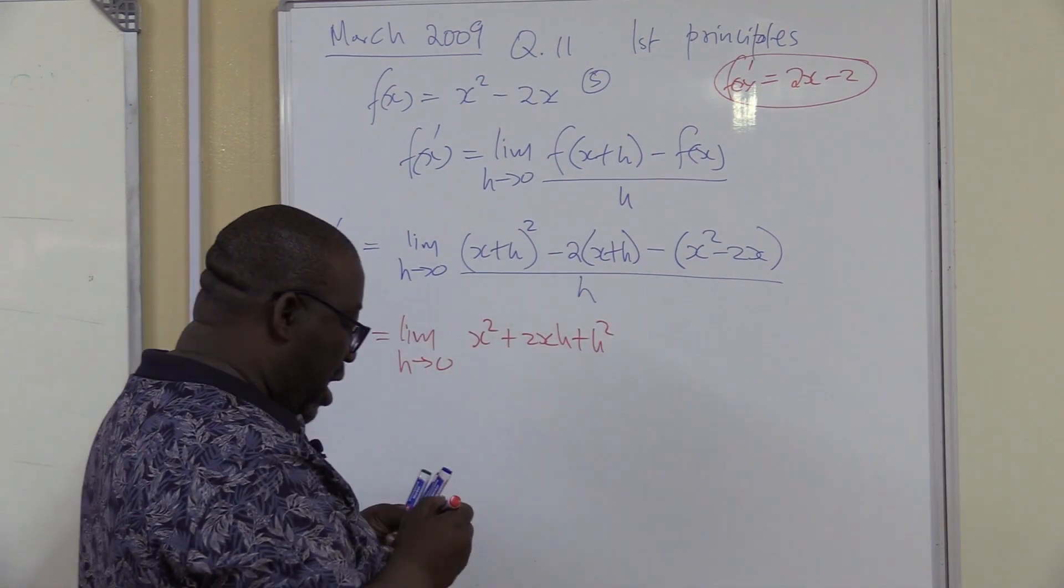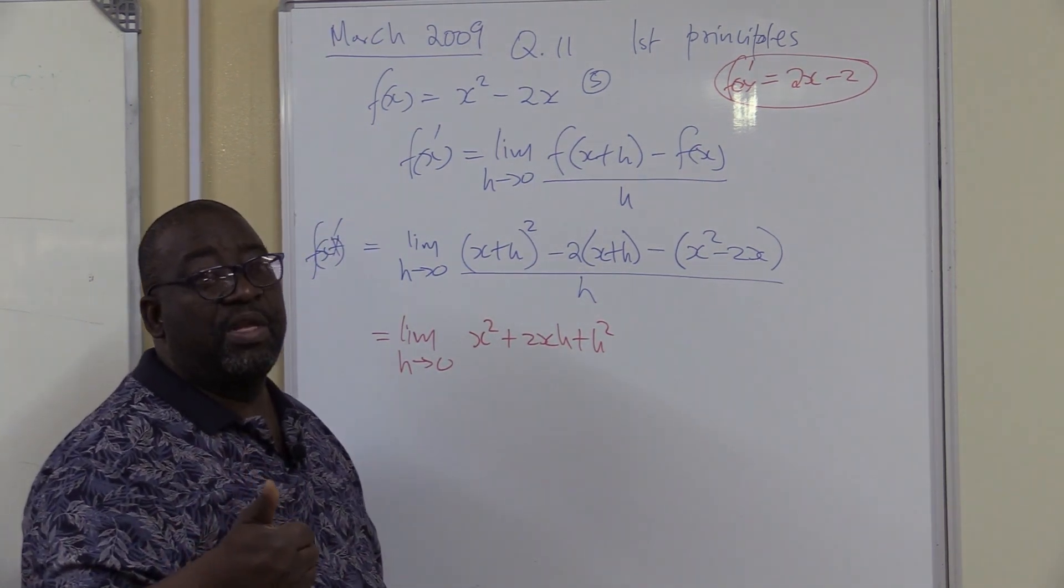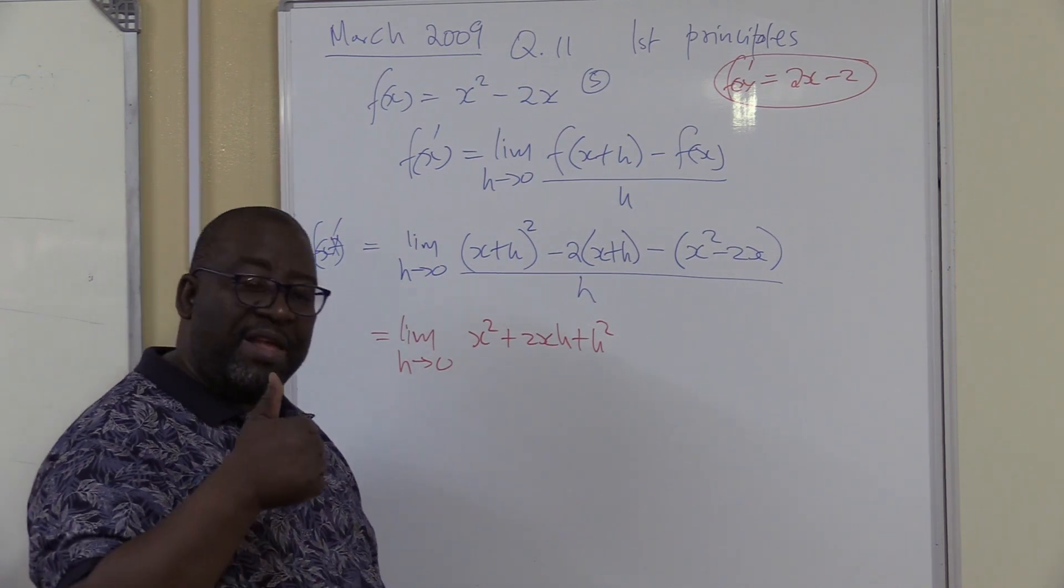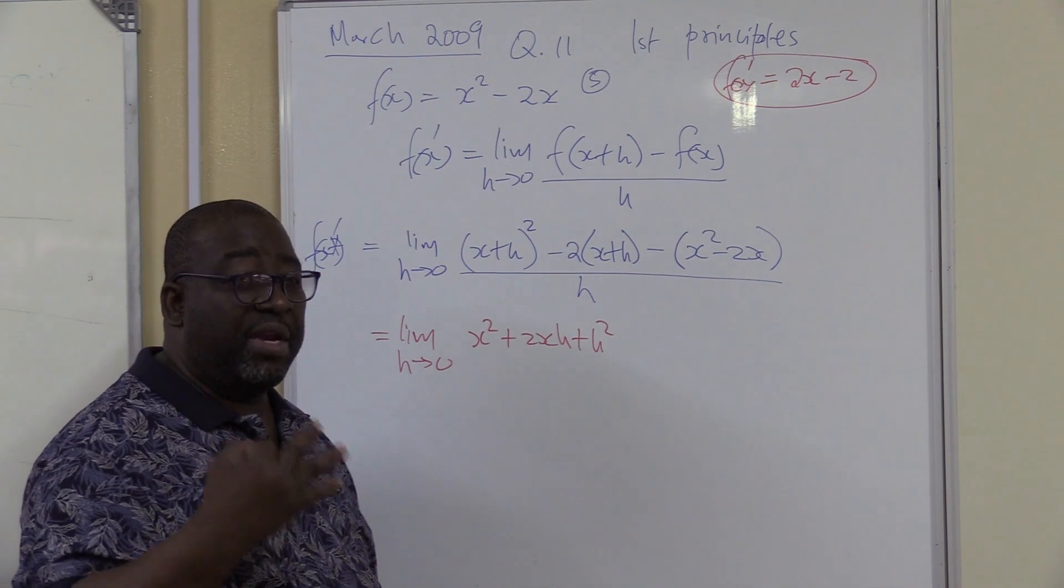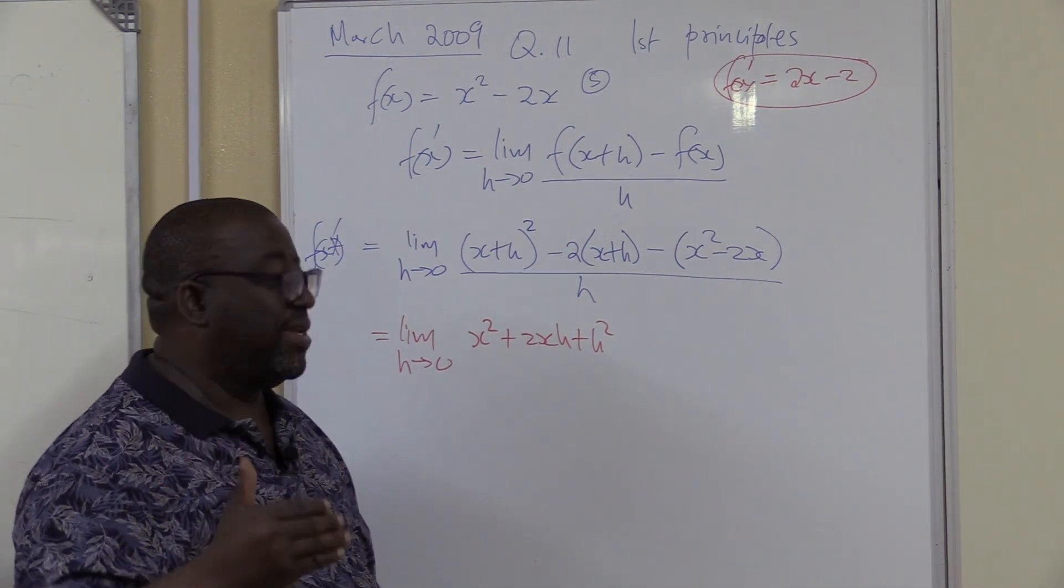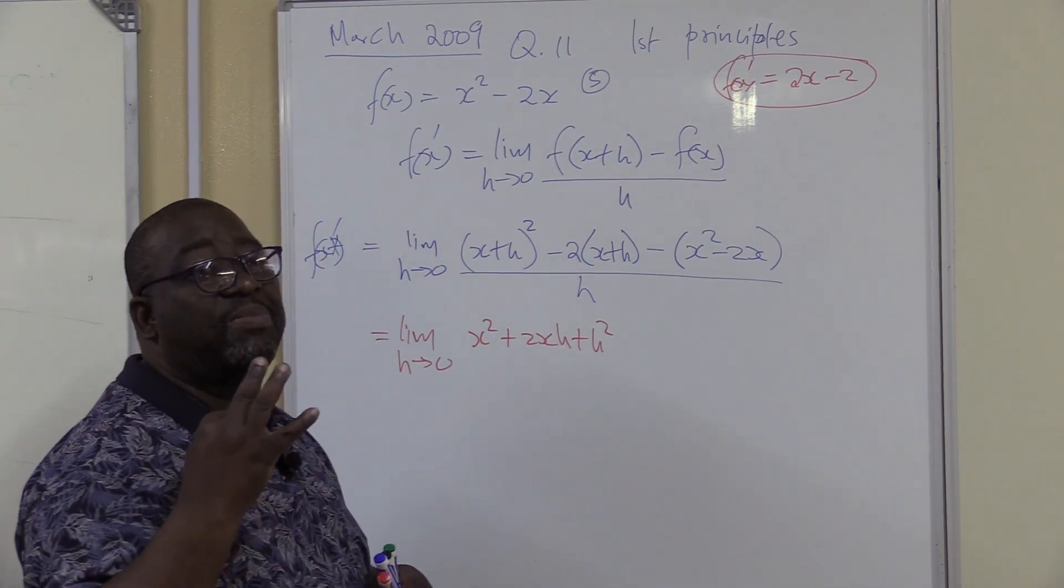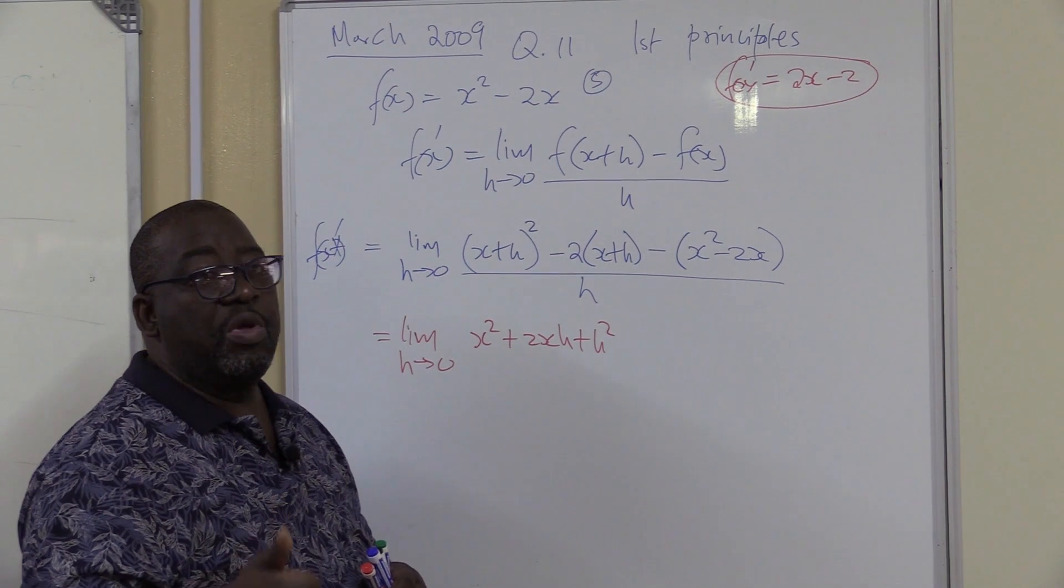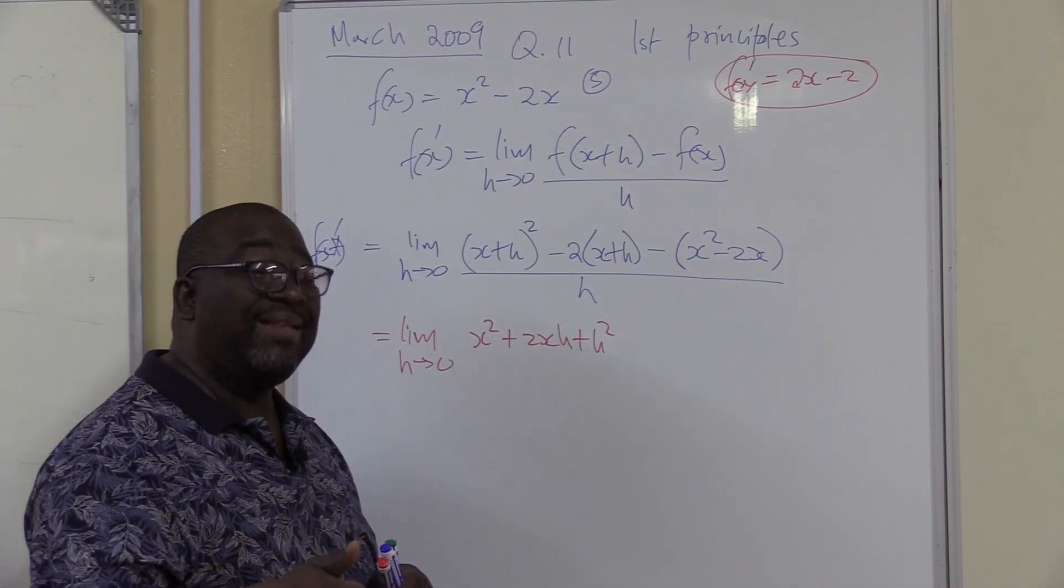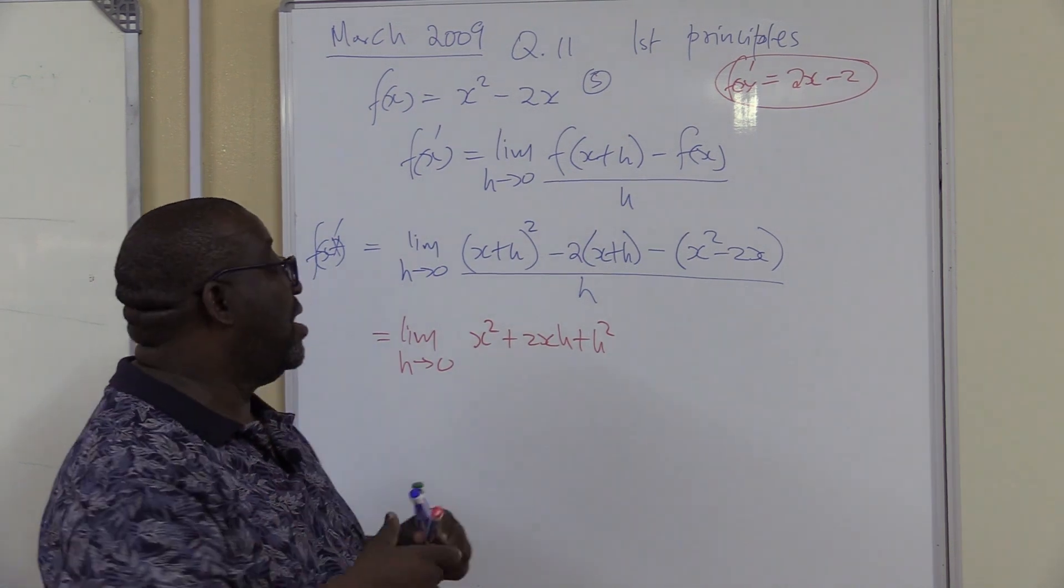How do you square a binomial? Step 1, you multiply the first term by the first term. Step 2, you multiply the first term by the second term and double your answer. Step 3, you multiply the second term by the second term. That's how you square a binomial by inspection.